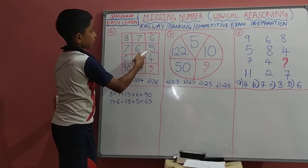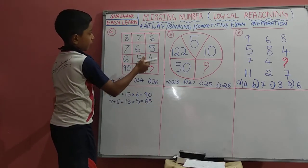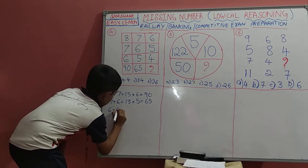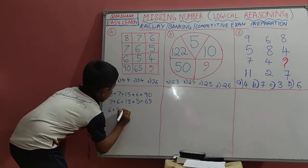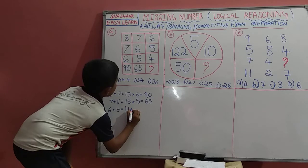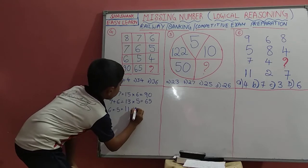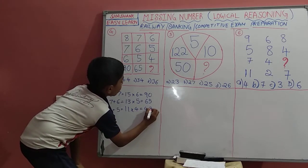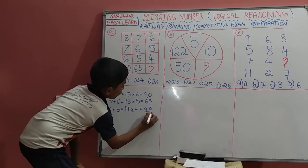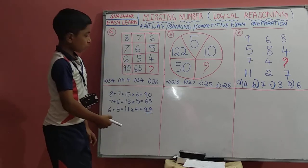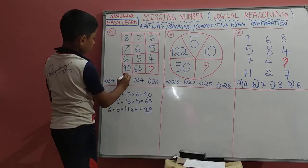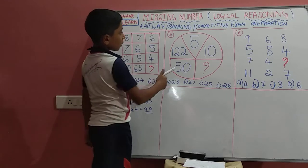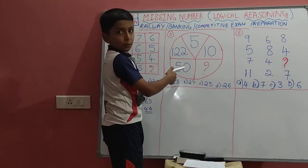So for this, 6 plus 5 is 11, and 11 into 4 is 44. So 44 is the right answer. So B is the right answer. Let's solve the second question.